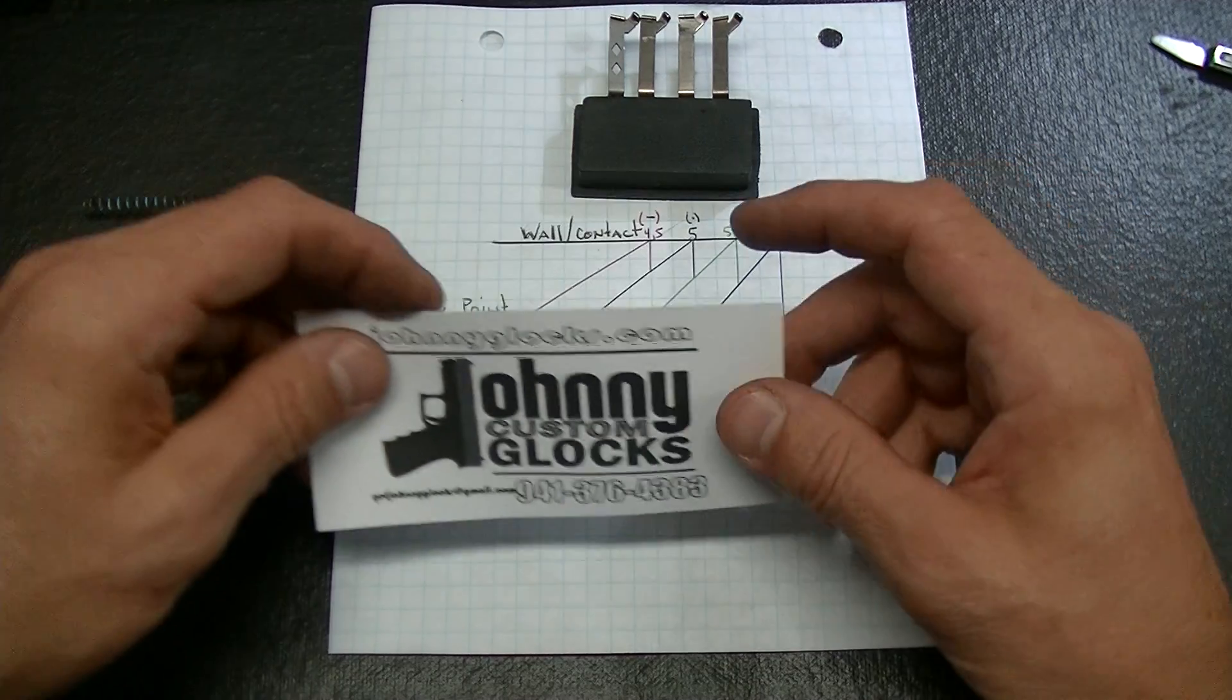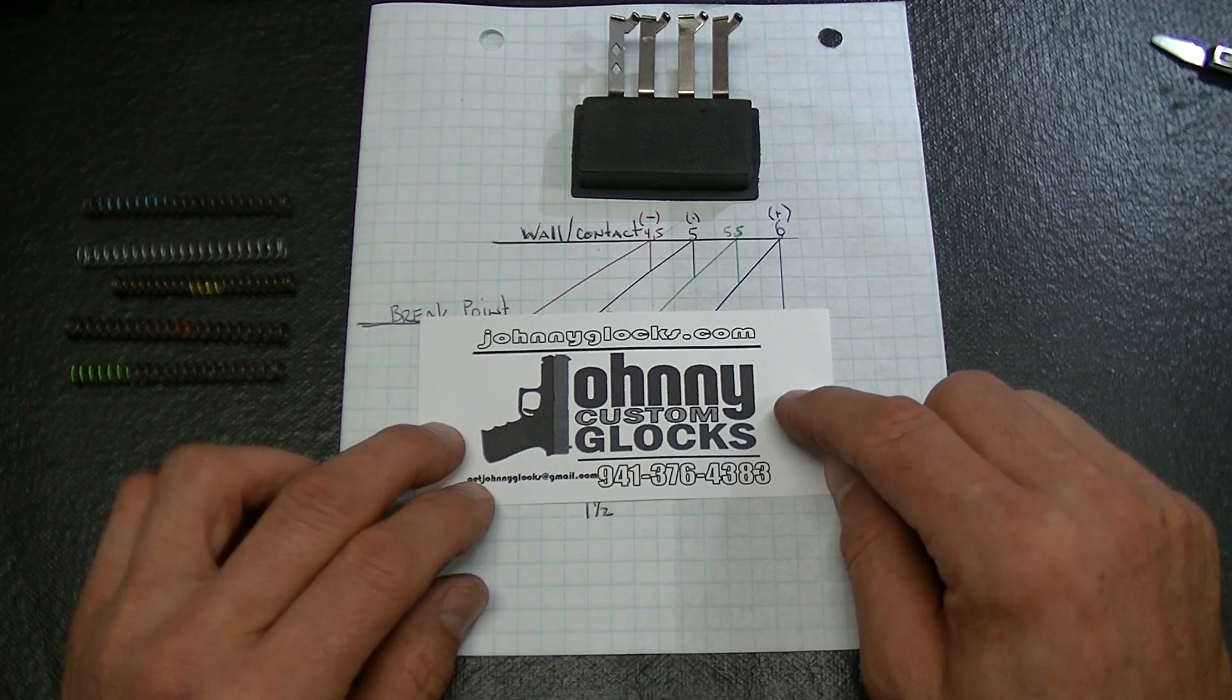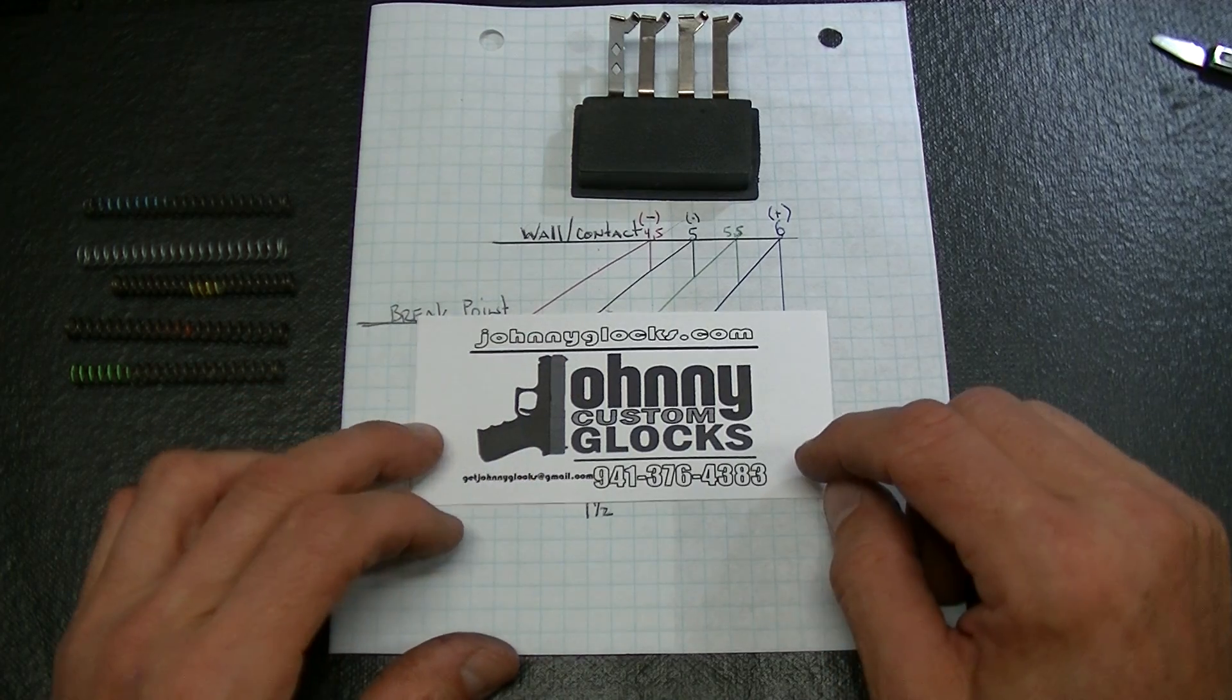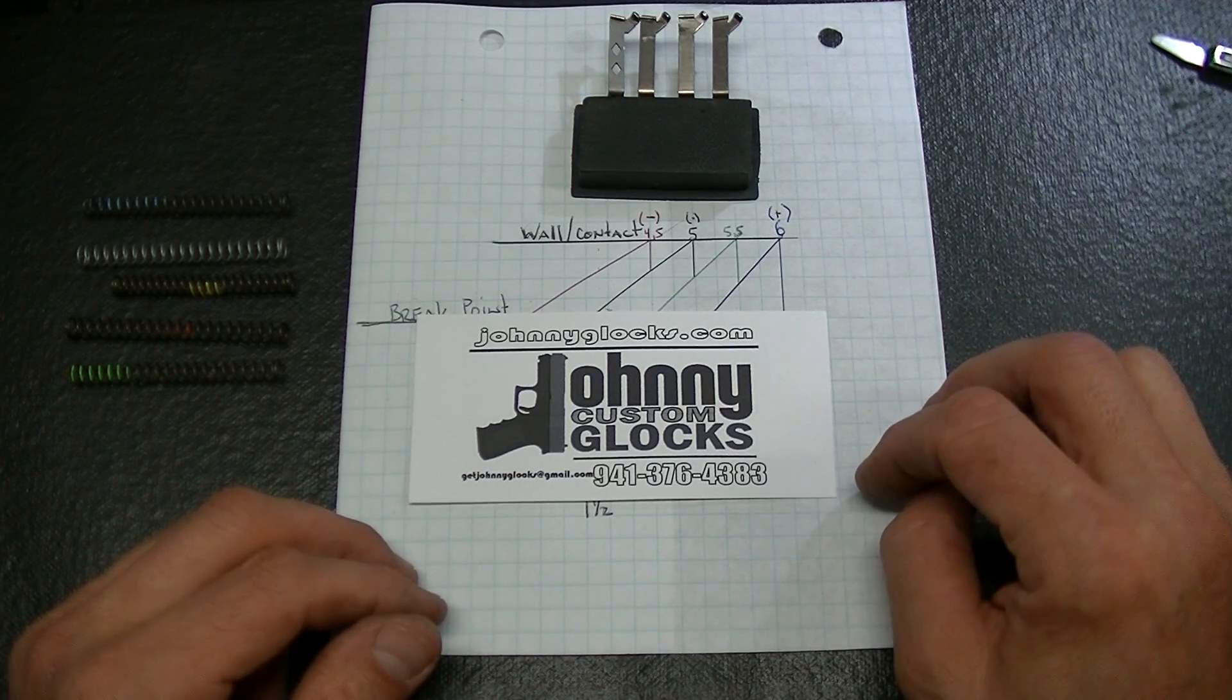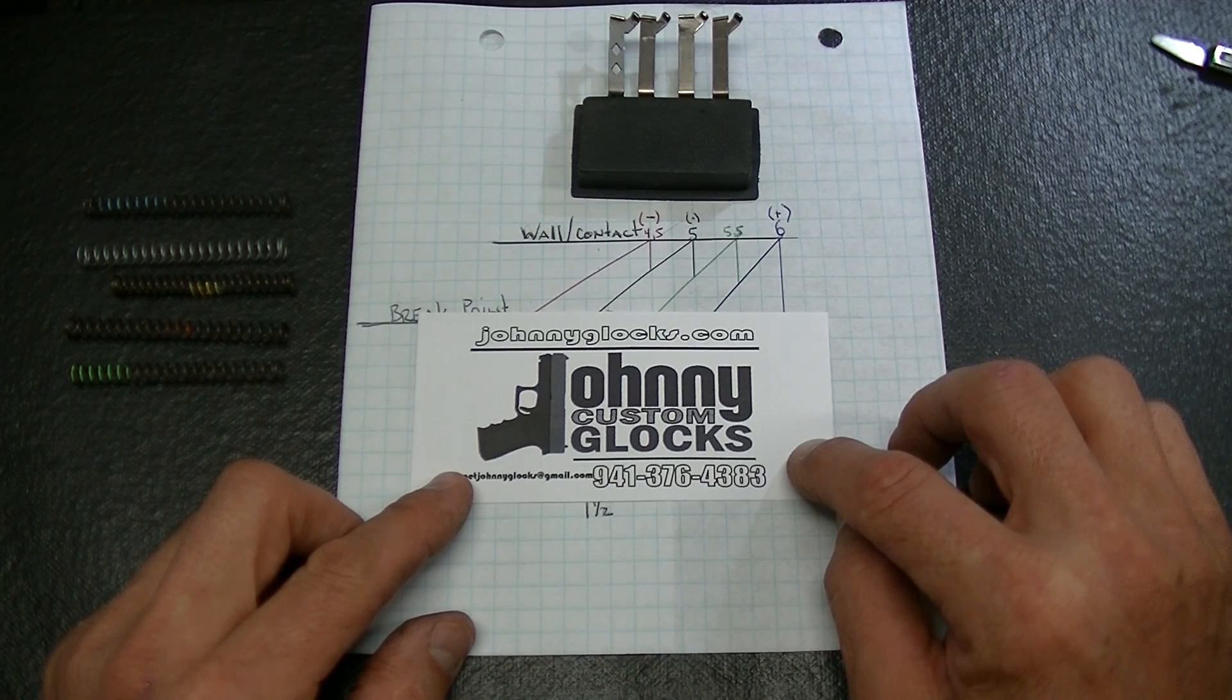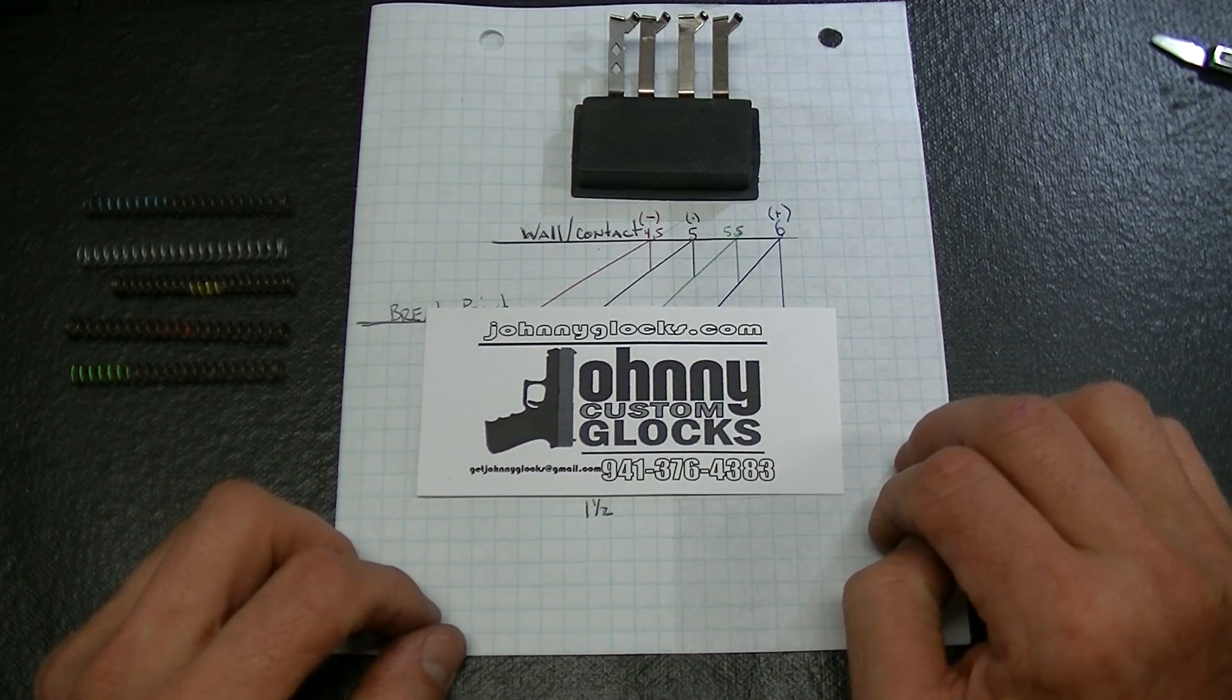Anyway, that was a little video for you. Hope you enjoyed it. Johnny Custom Glocks - GetJohnnyGlocks@gmail.com is the email, and the phone number is 941-376-4383. www.JohnnyGlocks.com - it's pretty useless to go there, it's got great information on the trigger groups that you can read, but it just redirects you to the wrong phone number and I have someone working on it right now. This is the phone number - call me if you're interested in any of the groups or if you bought something and you need some help with it. All right, you guys have a great day and take care.